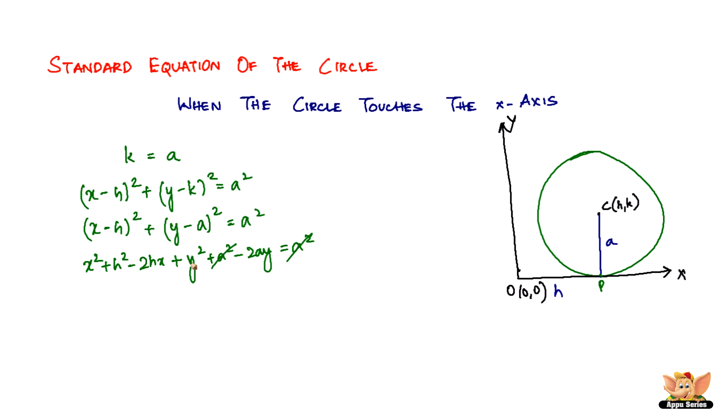a square a square gets cancelled. So all we are left with is x square plus y square minus 2hx minus 2ay plus h square equal to 0. So this will be the standard equation of a circle when the circle touches the x-axis.